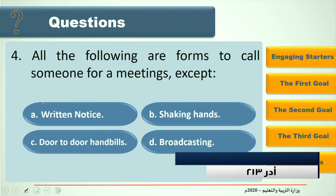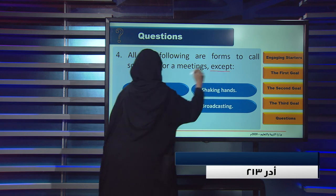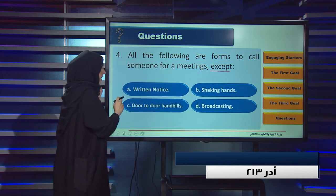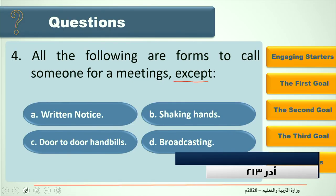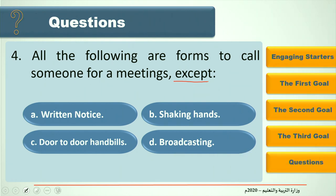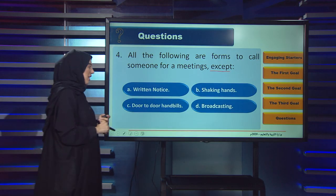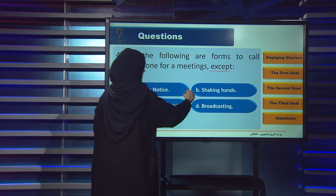Question four: All the following are forms to call someone for a meeting EXCEPT — A. Written notice, B. Shaking hands, C. Door-to-door handbills, D. Broadcasting. The answer is B: Shaking hands.